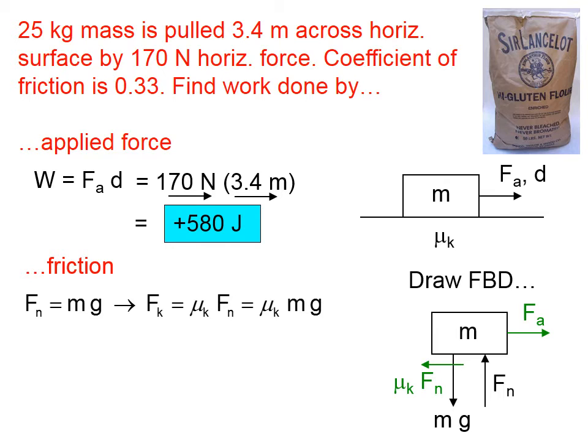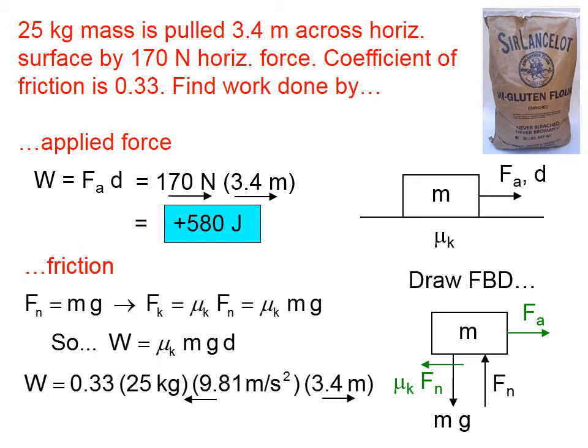And to find work, we need to take the force of friction multiplied by the distance through which that friction force acts. Well, that friction force acts through the entire 3.4 meters. And you can see here that I've put the 3.4 meters pointing to the right, but friction acts in the opposite sense. So friction does negative work on this mass.